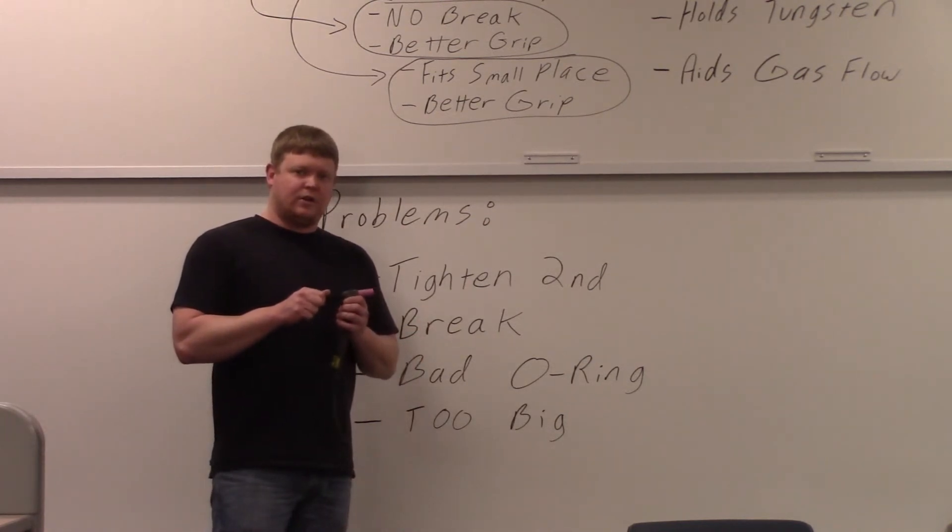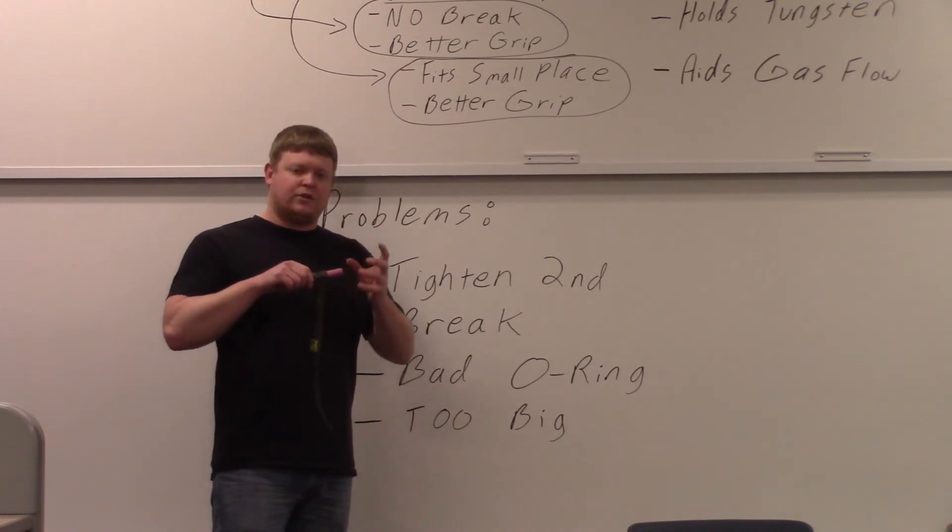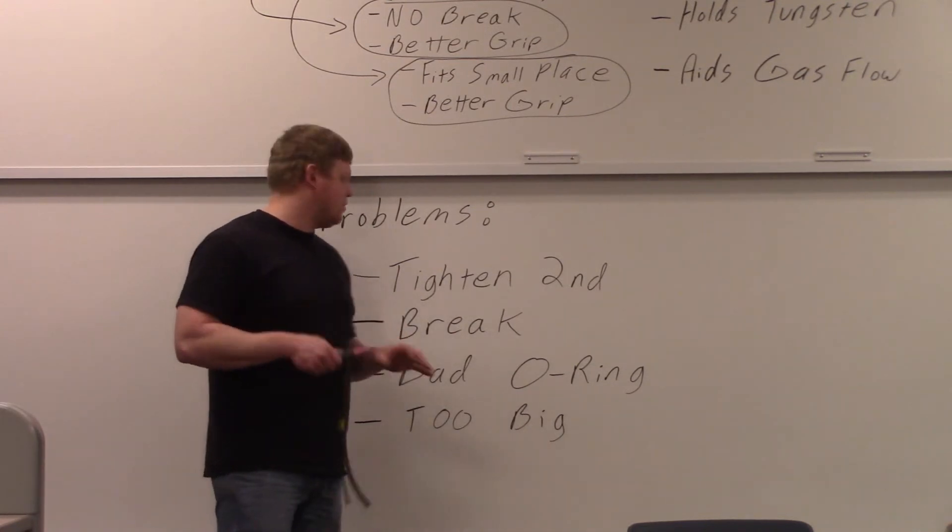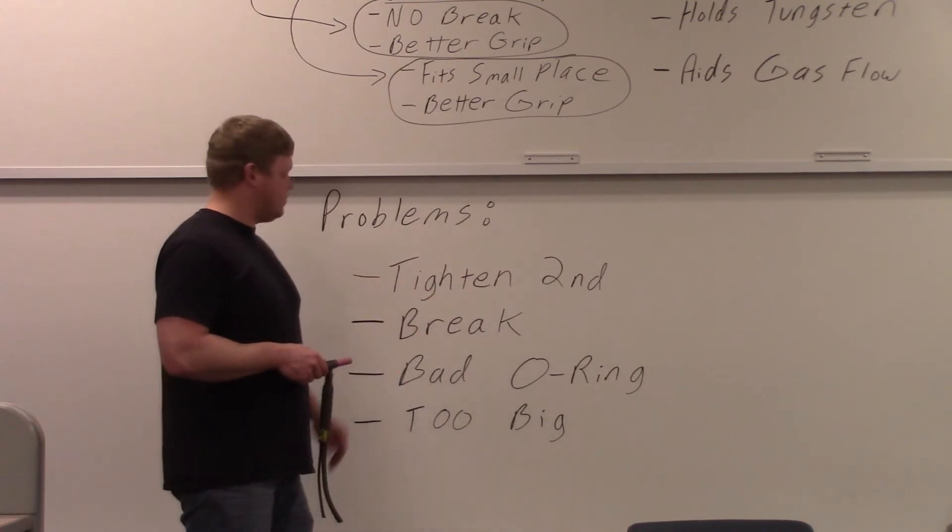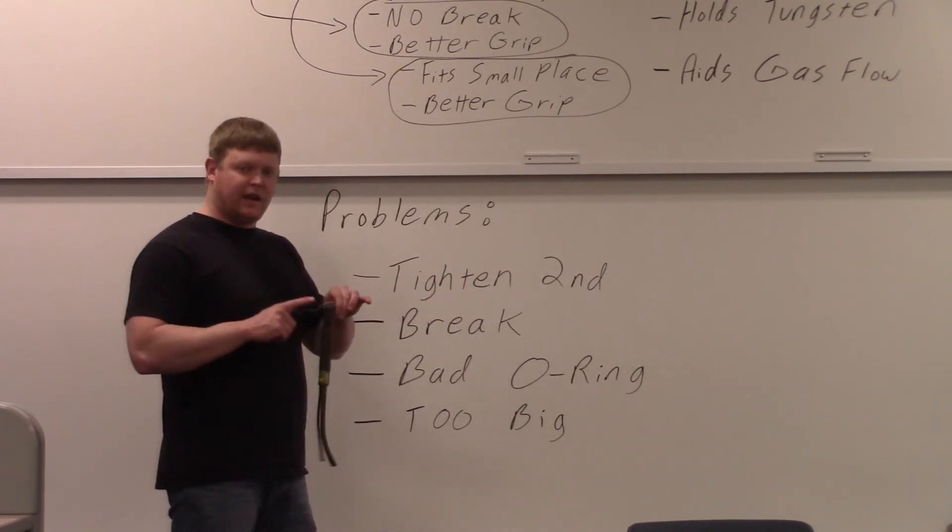In other words, we've gone over this with the collet body. If you tighten the end cap first, it won't pinch the tungsten because it's not close enough in the middle to squeeze that collet into the collet body. So you want to tighten it second. You tighten your collet body, you tighten your end cap last.